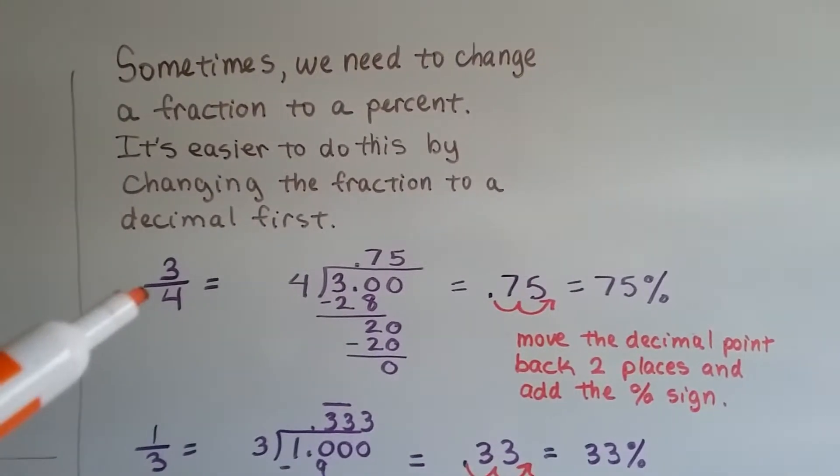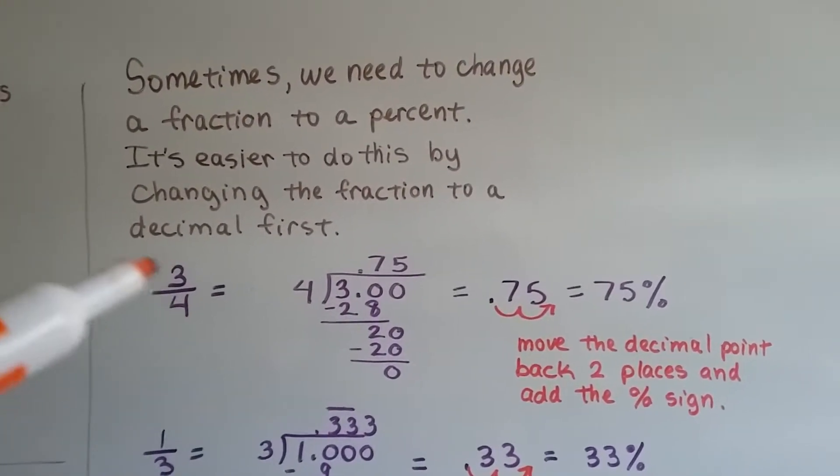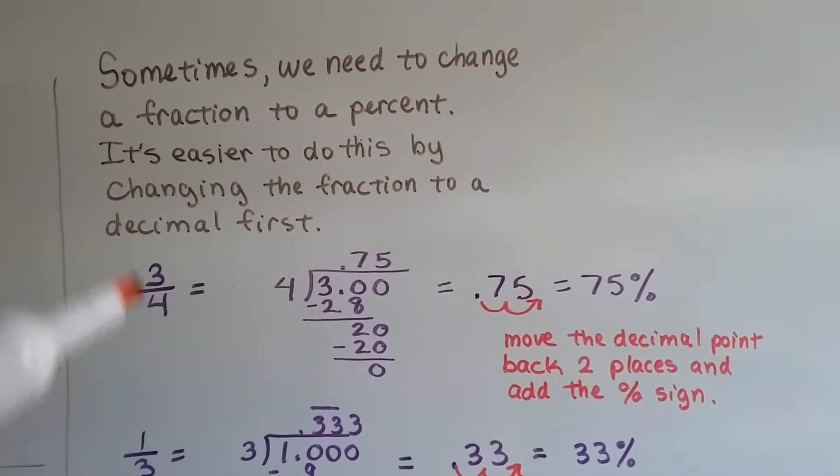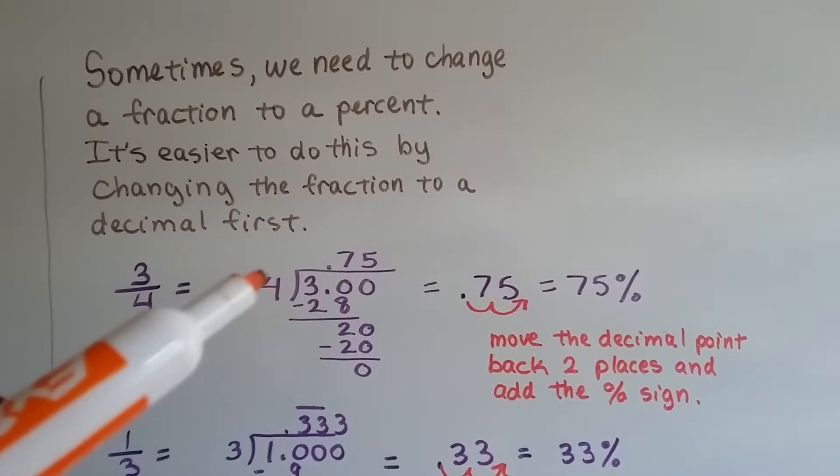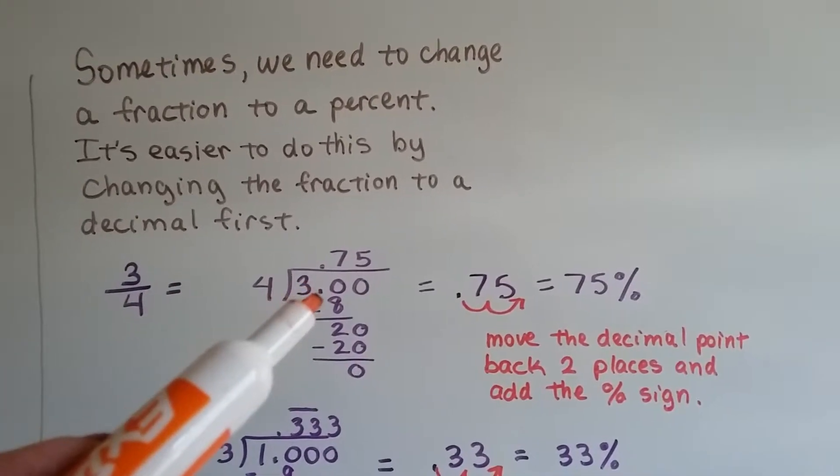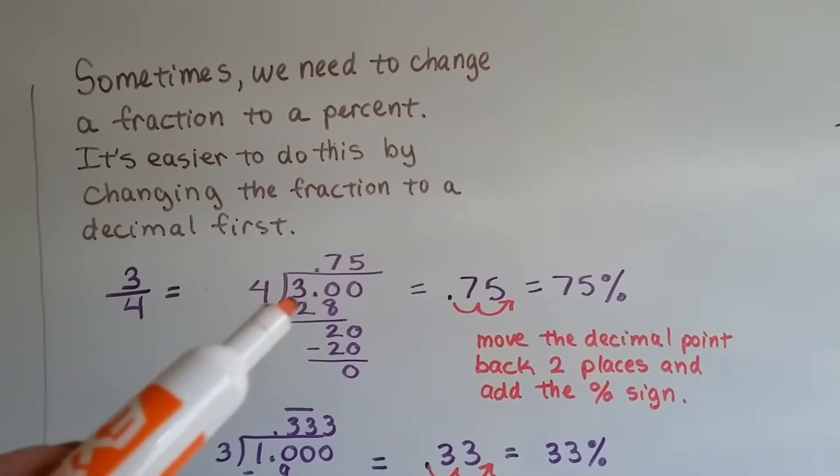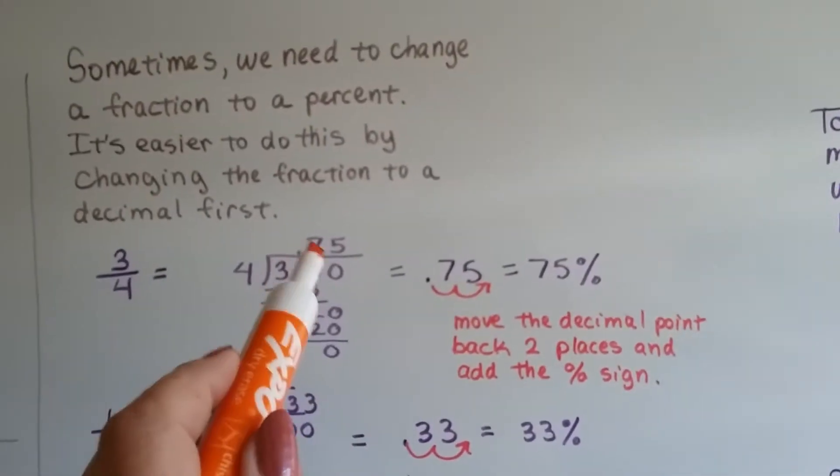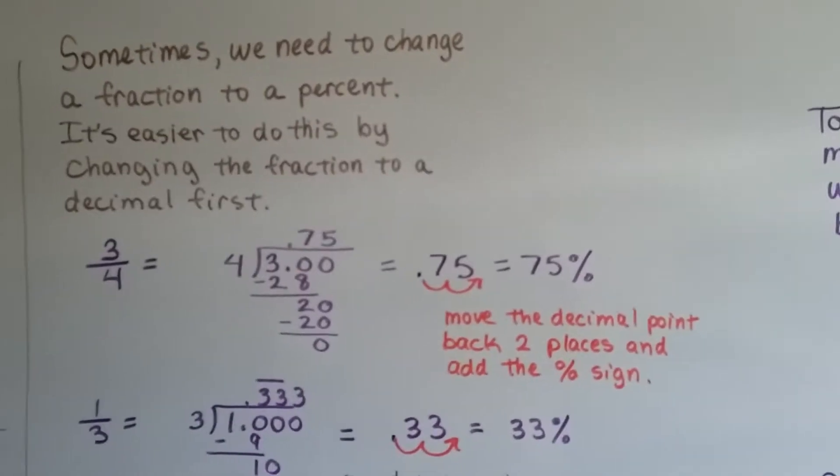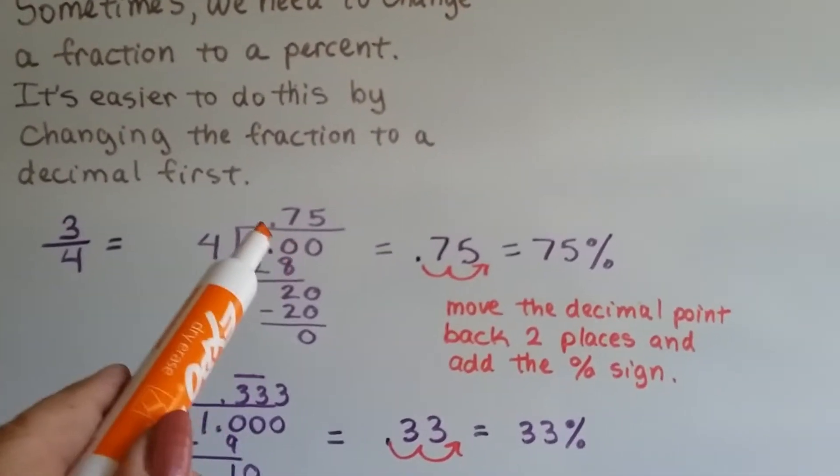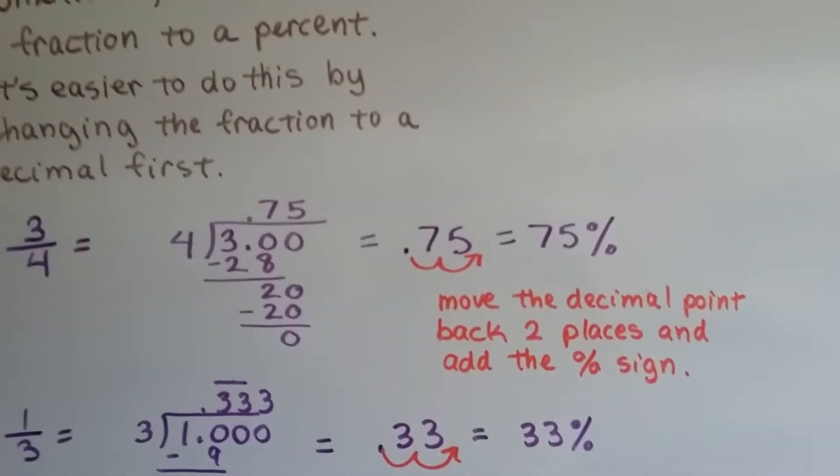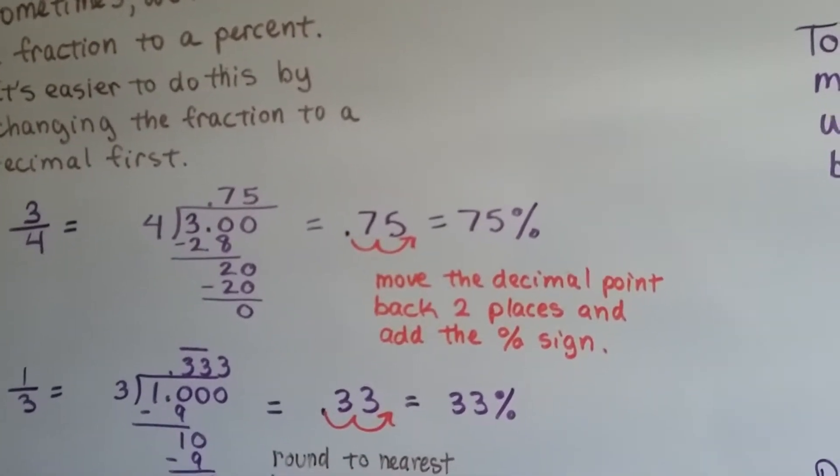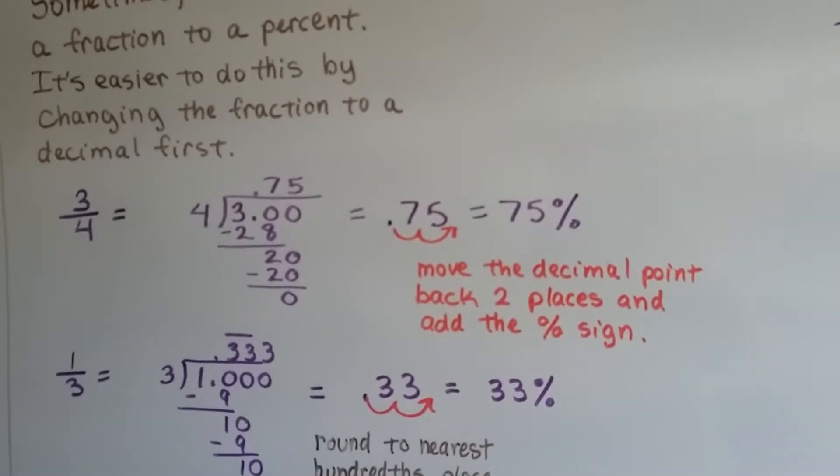So if you see three-fourths, remember, it's a little division problem. It means three divided by four. How many times can four fit into three? So we try putting that four into the three, and we need to put a decimal point and some zeros to help us do it, because it can't go into three on its own. Four is too big. So by adding the decimal point and the zeros, we can make it go in, and it comes out as 0.75 as a decimal. We move that decimal point back two spaces so it's not seen anymore behind the five, and we add the percentage sign.